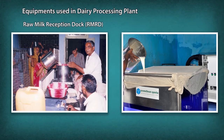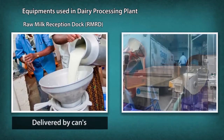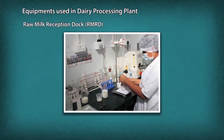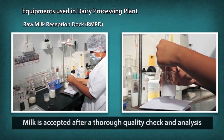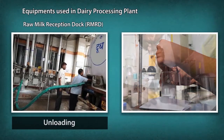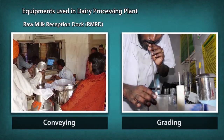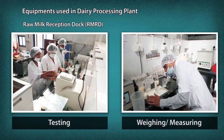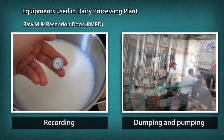Milk is delivered to the dairy plant either in cans or in tankers. Since further processing of milk mainly depends upon its quality, the decision of accepting the milk must be made immediately after arrival and thorough investigation. Reception includes unloading, grading, conveying, sampling, testing, weighing or measuring and recording, dumping and pumping.